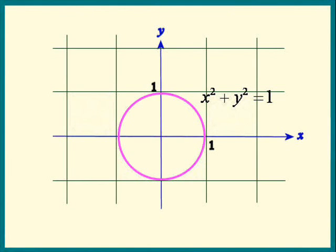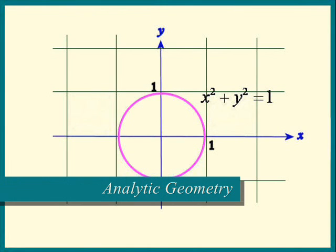When their daughter was born, they named her Anna. And guess what? That was the birth of Analytic Geometry.